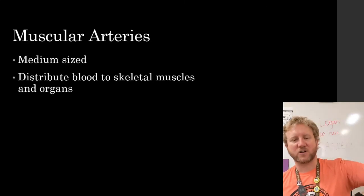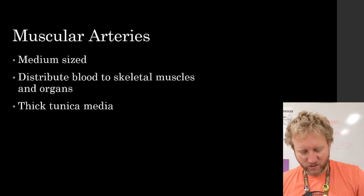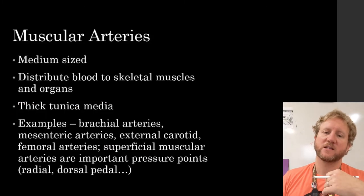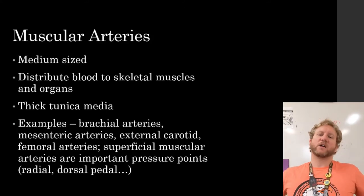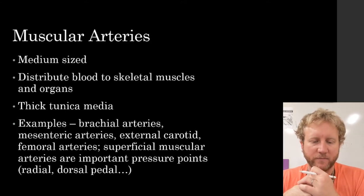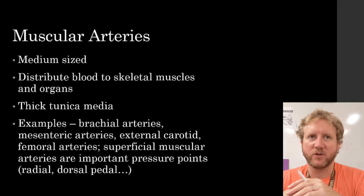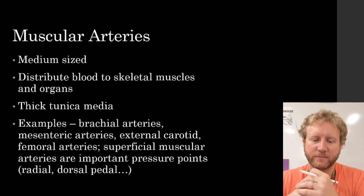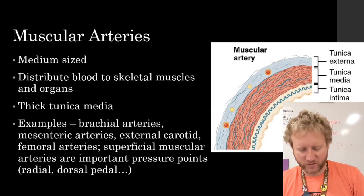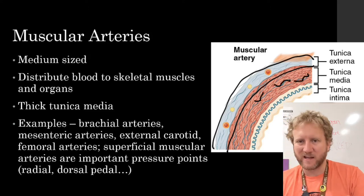The second class are the muscular arteries — these are medium-sized arteries that branch off of the elastic arteries to distribute blood to the skeletal muscles and organs. They're characterized by a thick tunica media. Examples include the brachial arteries, mesenteric arteries that provide blood to the abdominal organs, external carotid, and femoral arteries in your legs. Superficial muscular arteries — close to the surface — are important pressure points, for example in your feet and arms, and are important for therapy.